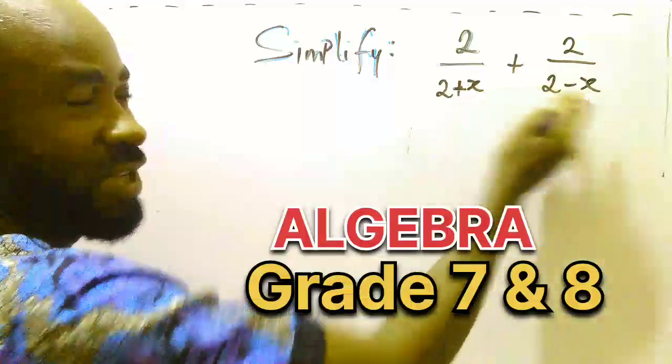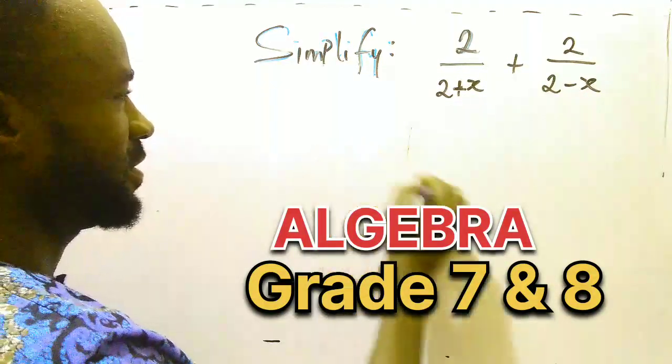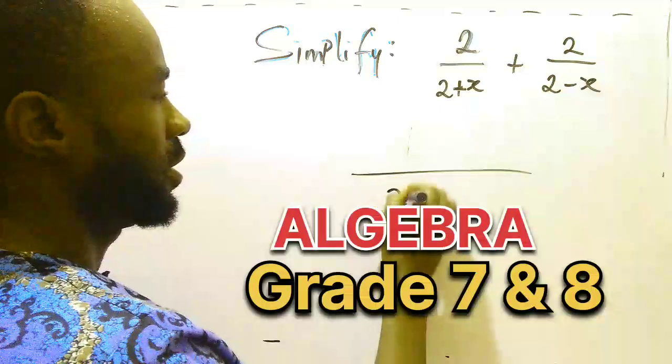The first thing to do is to find the LCM of the denominators and the LCM is simply their product.